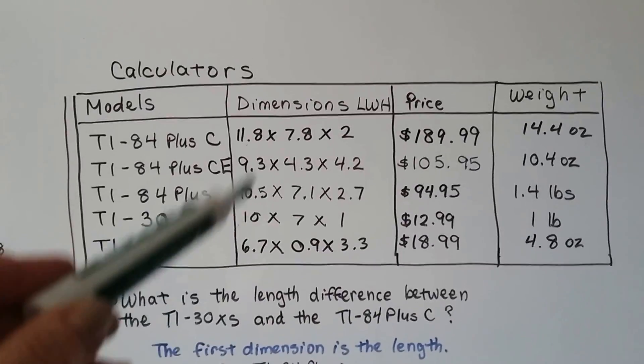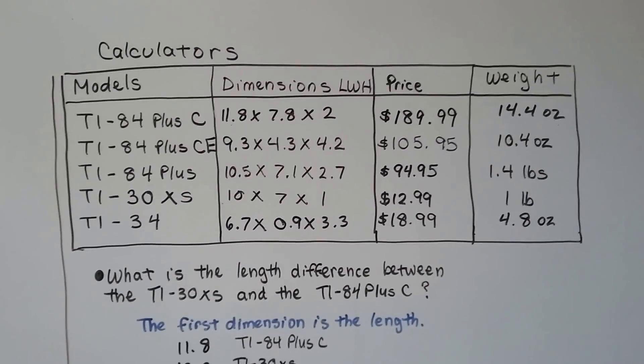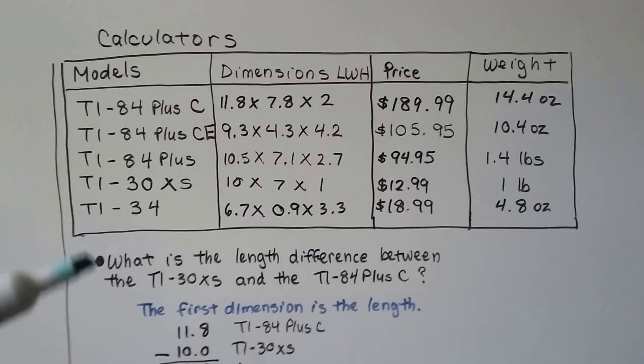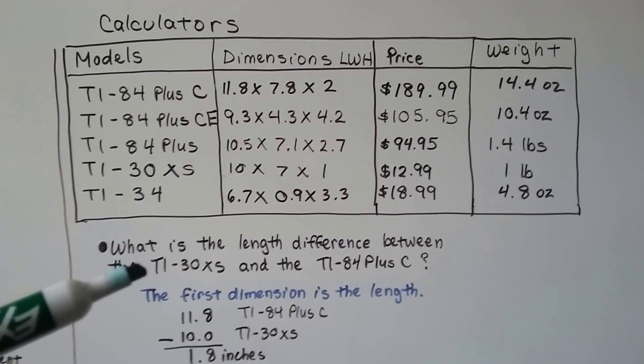Here's their dimensions, their prices, and how much they weigh. So from this table, what is the length difference between the TI-30XS and the TI-84 plus C?